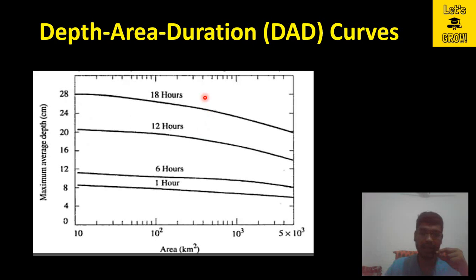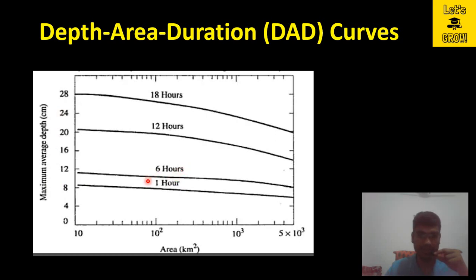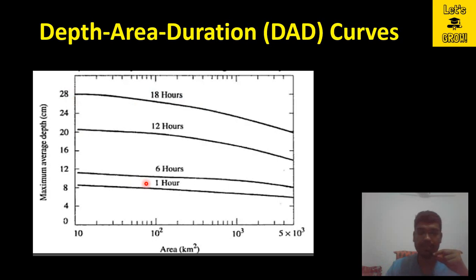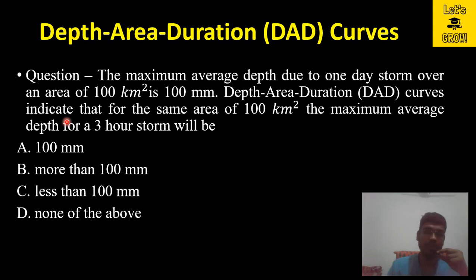It is also obvious that if the duration of rainfall increases, the maximum average depth will also increase. For a 1-hour duration, the maximum average depth is the lowest; for 6-hour, 12-hour, and 18-hour durations, the maximum average depth progressively increases. So the conclusion is: as the duration of rainfall increases, the maximum average depth also increases.